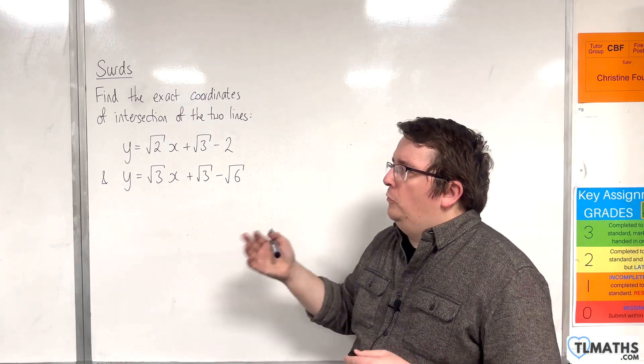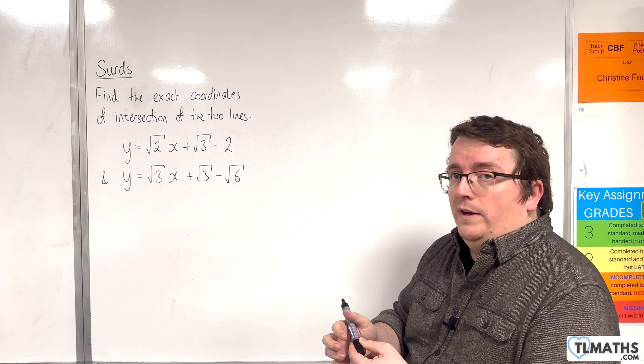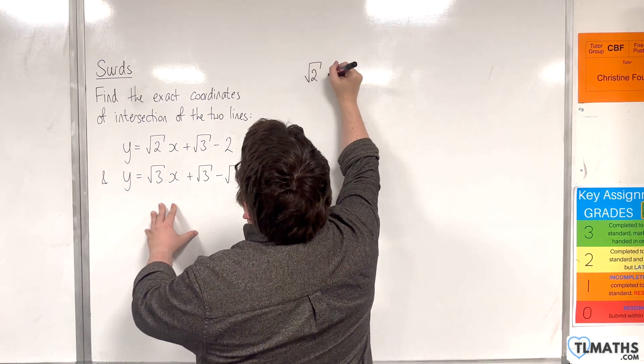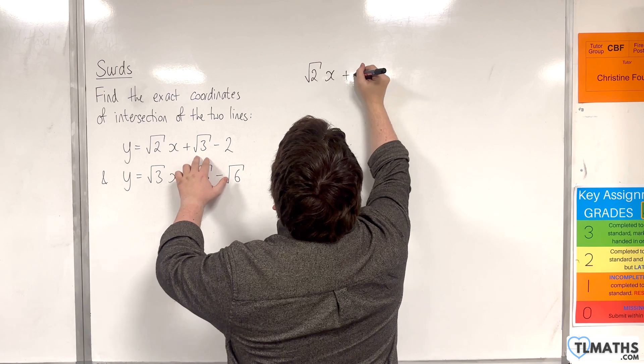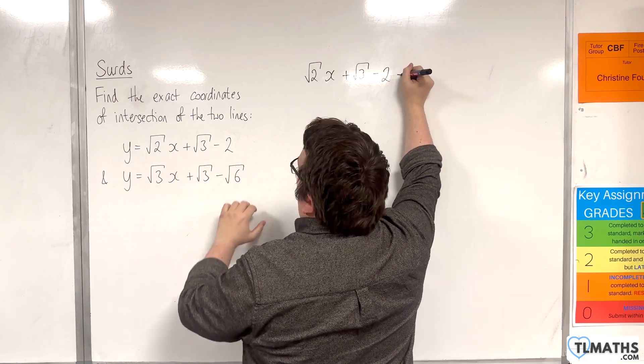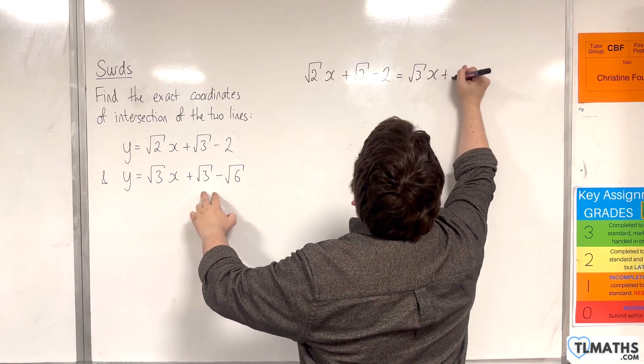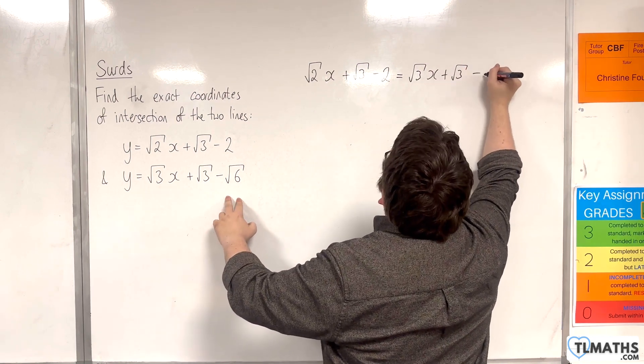So in order to solve these, I'm going to put one equal to the other. So I'm going to write root 2 times x plus root 3 take away 2 is equal to root 3 times x plus root 3 take away root 6.